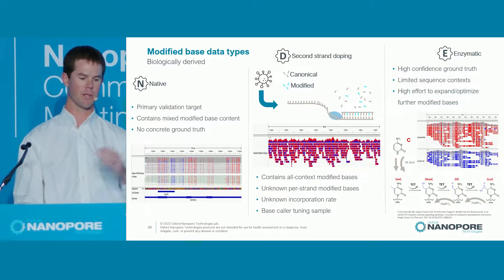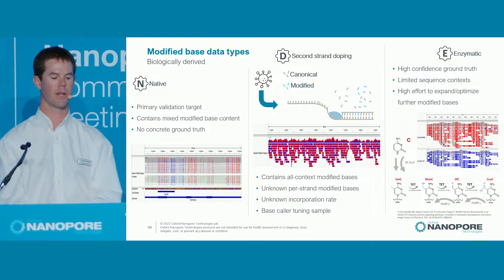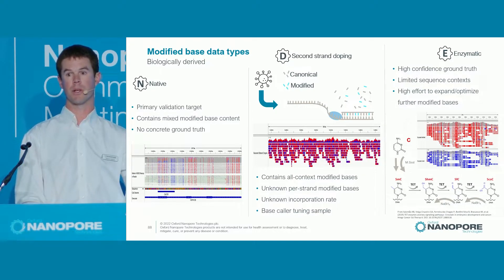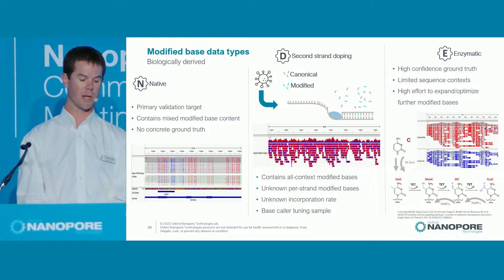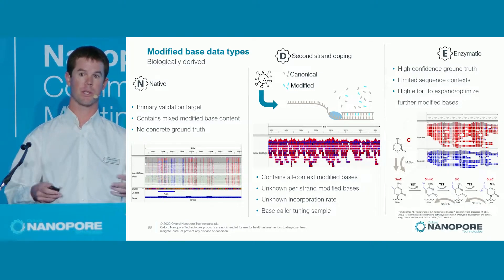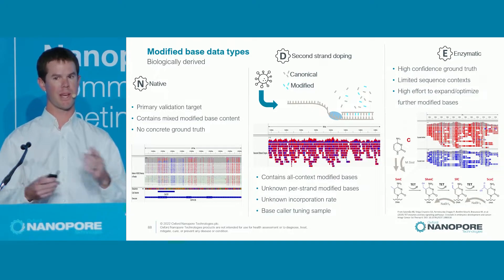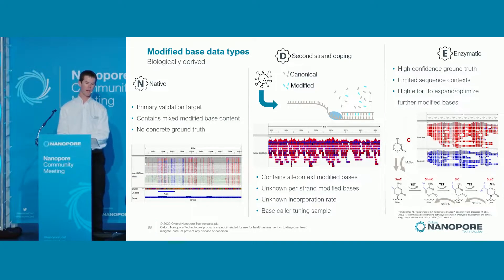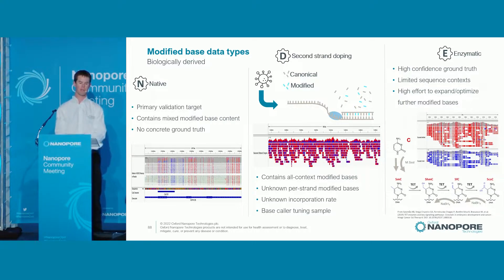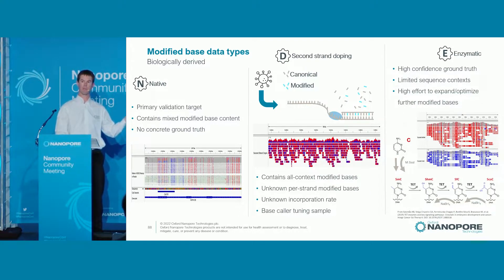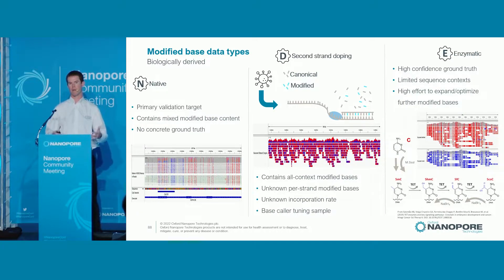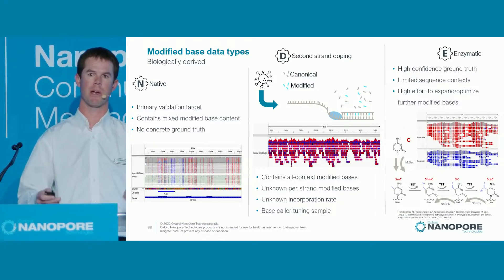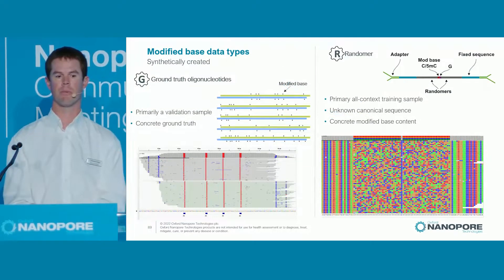The second type is second-strand doping, where we dope in a sample so it comes in all contexts, but we don't know where they are on each strand. It's useful to see the modified base in a ton of contexts, but it's tricky for training. Finally, the enzymatic model is where you treat a sample with an enzyme — usually starting with PCR. You get one sample that's completely C and another that's completely 5-MC, though it's very hard to expand this to new modified bases since you need enzymes from nature.